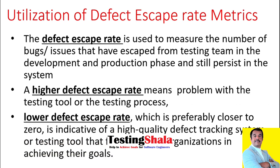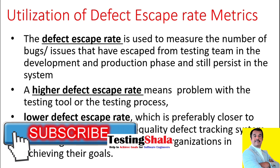That is the first thing we should do. The second one is we should use the right metrics in order to avoid defects moving on to the production environment. We have to use metrics like the defect escape rate metric, which measures the number of defects that escaped from the testing team during development and how many defects were found during the production phase.